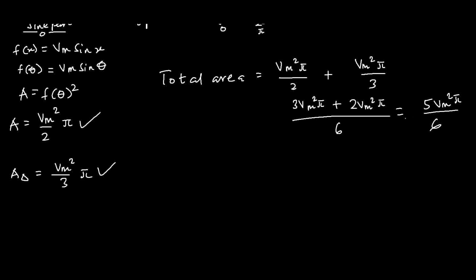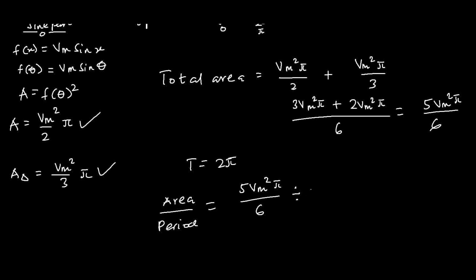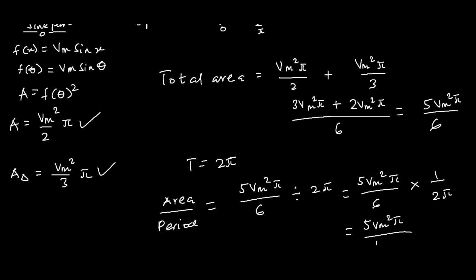Now we divide the total area by the period, which is 2π. So we have (5Vm²π/6) ÷ (2π) = (5Vm²π/6) × (1/2π) = 5Vm²π / 12π. The π cancels, giving us 5Vm²/12. This is the mean value.